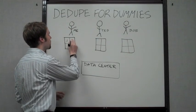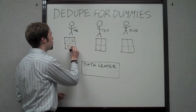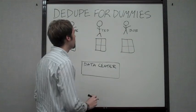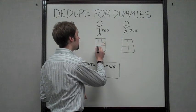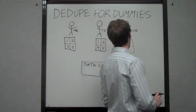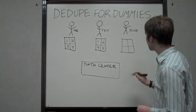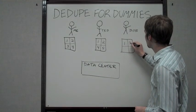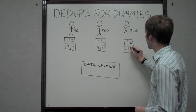If my file has blocks 1, 2, 3, and 4, Ted's file is a little bit different and is 1, 2, 4, and 5. And Bob's file is different still: 1, 2, 3, and 5.